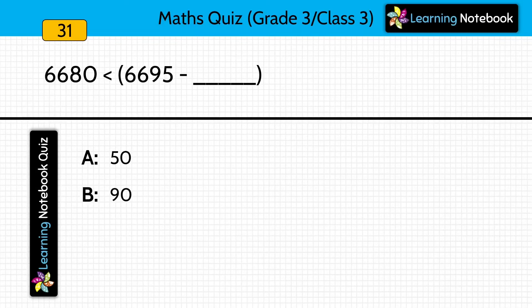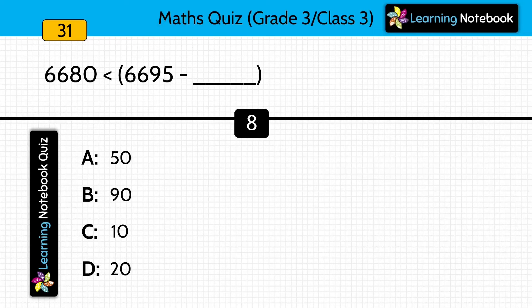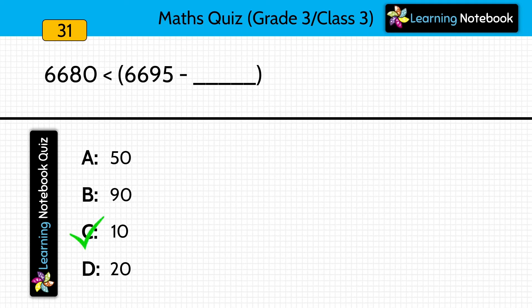6680 is less than 6695 minus dash. Answer is 10. 6680 is less than 6685, and 6695 minus 10 is 6685.